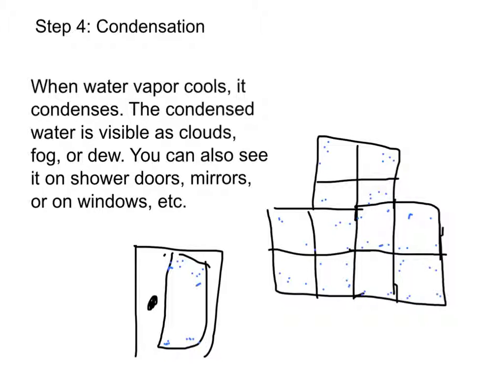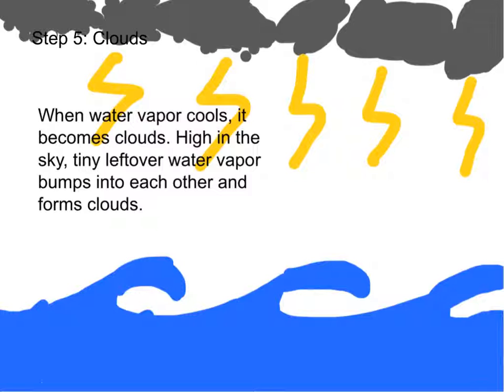Step 5: Clouds. When water vapor cools, it becomes clouds. High in the sky, tiny leftover water vapor bumps into each other and forms clouds.